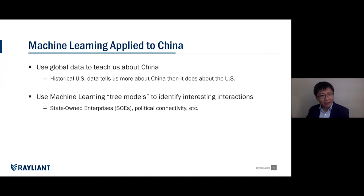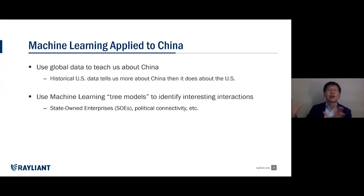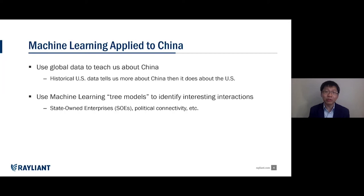This is where you can be clever. Machine learning looks at data, learns about it, and then predicts the future. So you can have the machine learn about China by using US historical data, global historical data, and historical data from other emerging economies where markets were once more inefficient — more like what China is today. Historical US data is actually far more useful for predicting China today than it is for predicting the US today, because the US today is simply too efficient relative to its history.